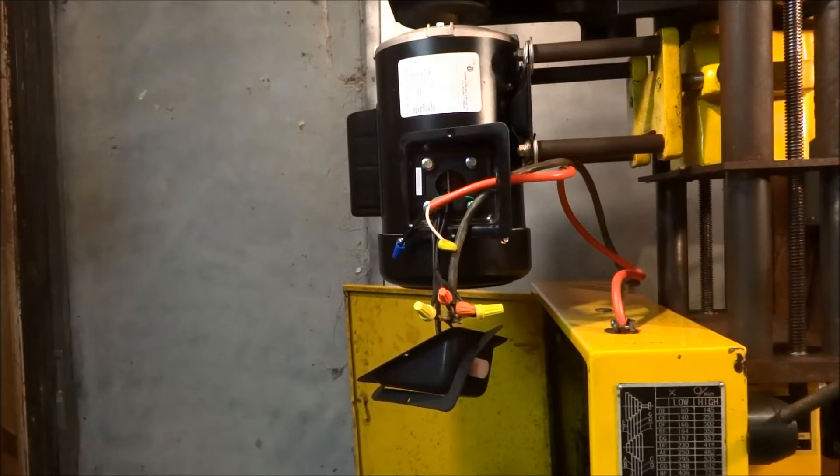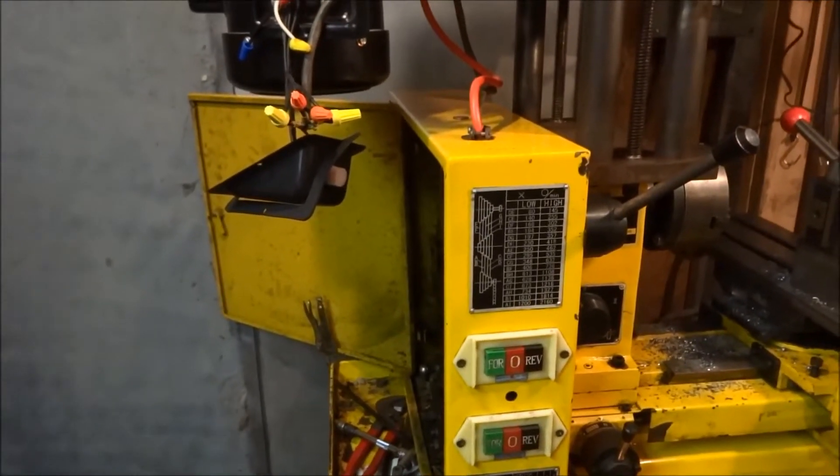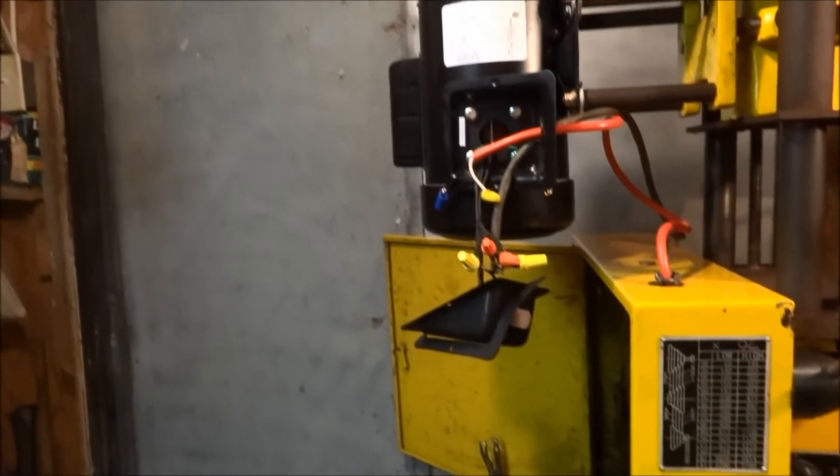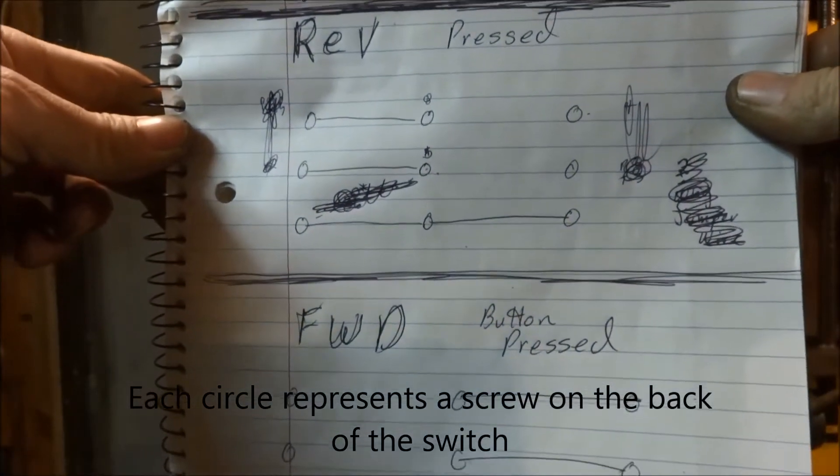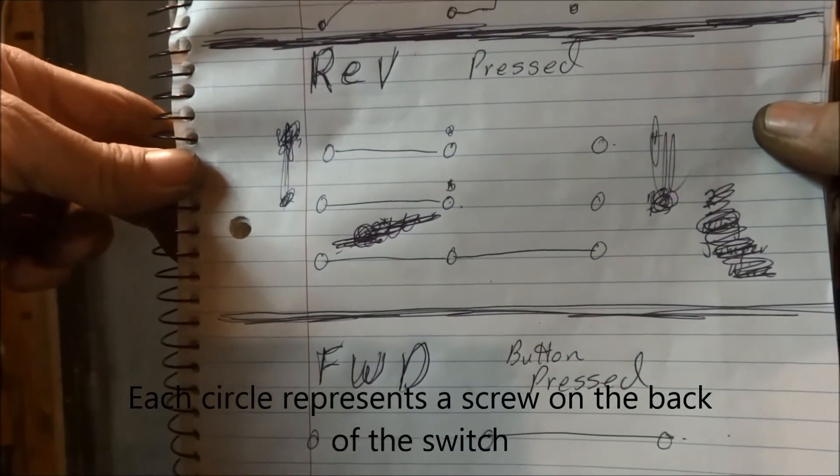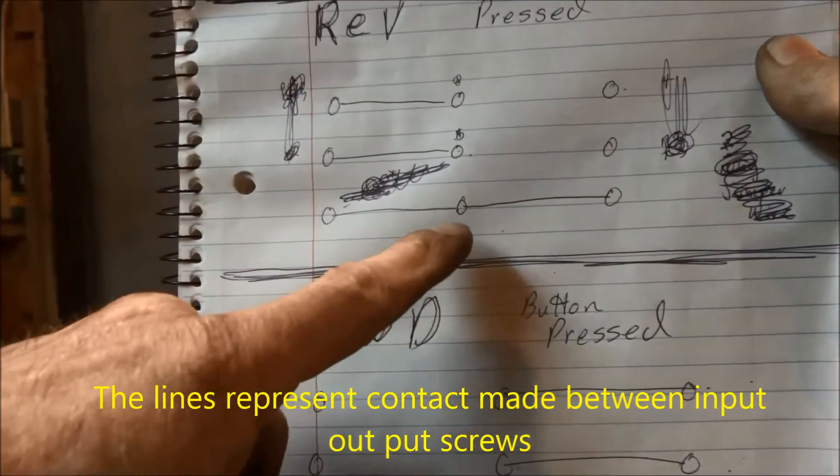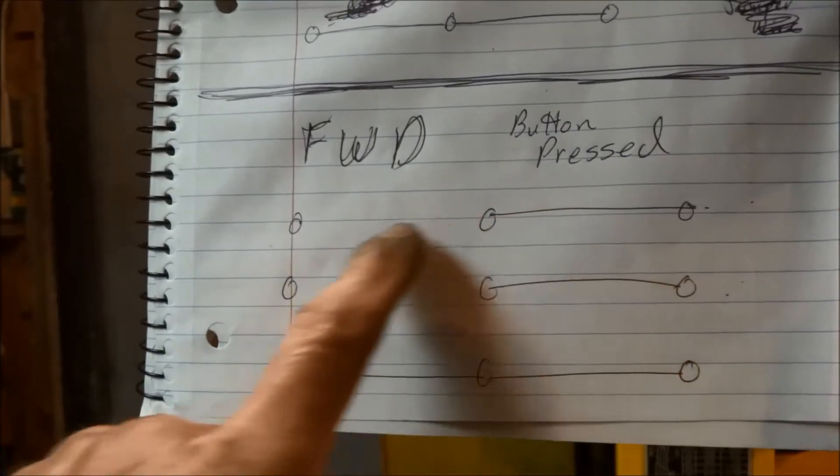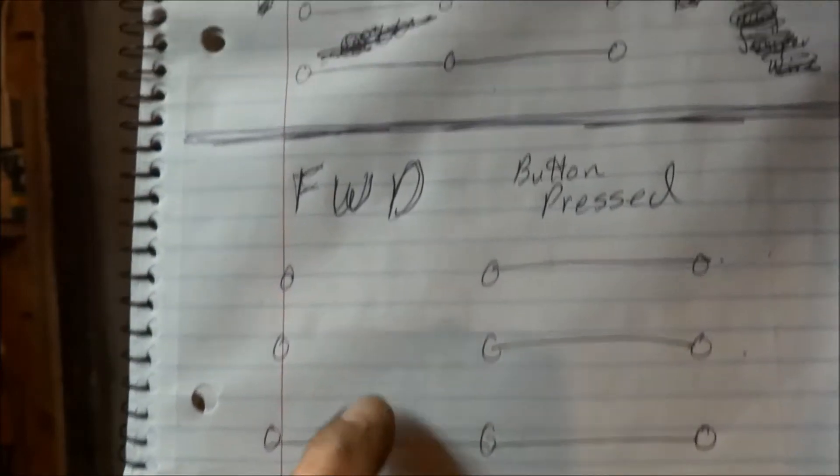That's the wiring hooked up. This is on a Shopmaster lathe. I had to replace the motor on it. Forward reverse switch, I believe pretty much all of them will be about the same, but this is what I have. Reverse button pressed, this is where the contacts connect. Forward button pressed, these two switch, these two power both sides every time.